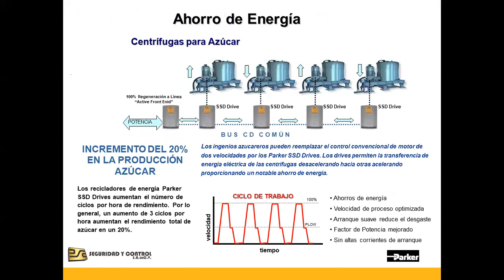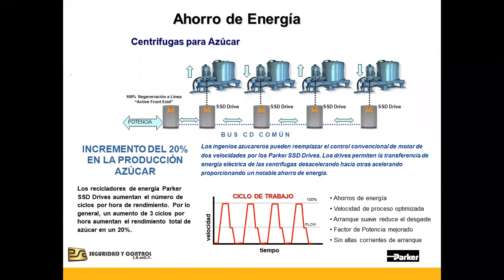También puede ser usado en centrífugas para azúcar, con la intención de obtener un ahorro de energía considerable. El jarabe es separado de los cristales de azúcar sin refinar en centrífugas con cestas perforadas que giran a altas velocidades. El jarabe expulsado se hierve de nuevo y más cristales se recuperan. Con esta aplicación se puede incrementar un 20% la producción de azúcar. Los ingenieros azucareros pueden reemplazar el control convencional de motor de dos velocidades por los drives Parker de la línea SCD.